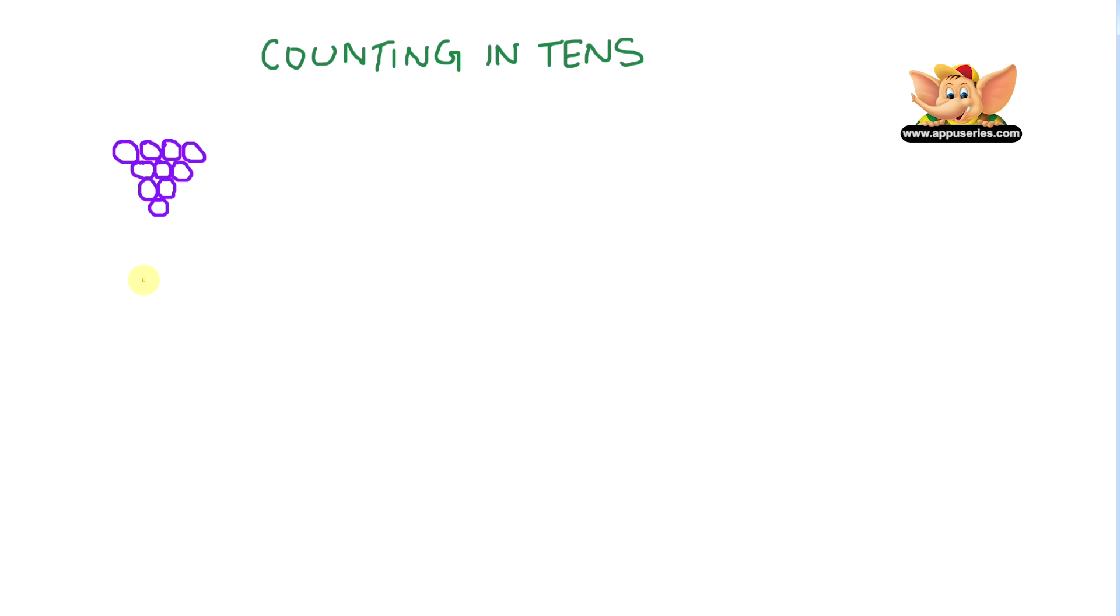Now we know this is a bunch of ten grapes. So let's call this one group, a group of tens. Now how many do we have? We have two groups of grapes. So that's ten plus ten equals twenty grapes.